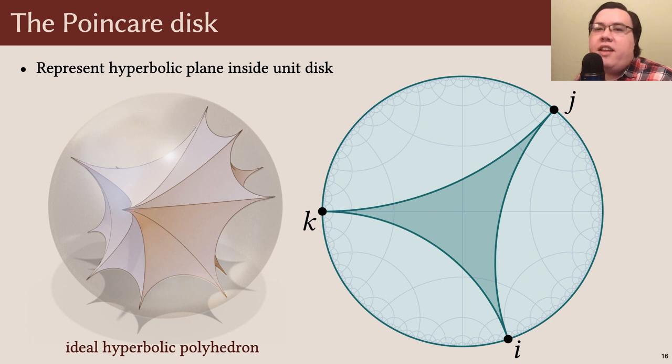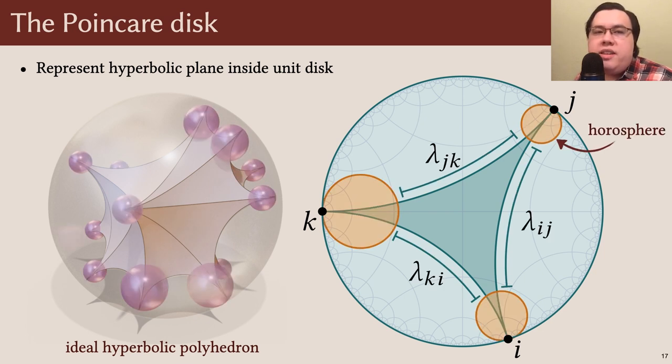These polyhedra also have infinite edge lengths. To make it easier to talk about them, we can cut off their tips of vertices using what are called horospheres, depicted as spheres tangent to the boundary. This leaves behind segments of finite length which describe the polyhedron. Note that since there are many different horospheres we could pick, there are many sets of lengths which encode the same polyhedron.